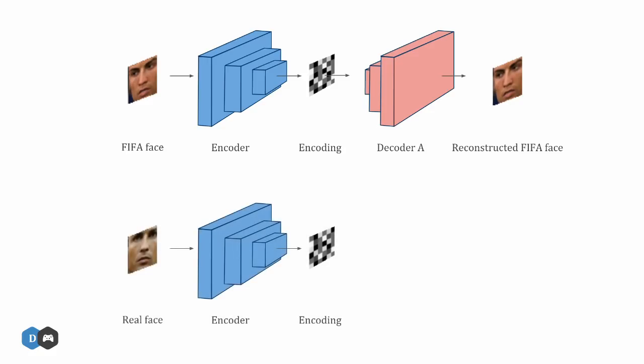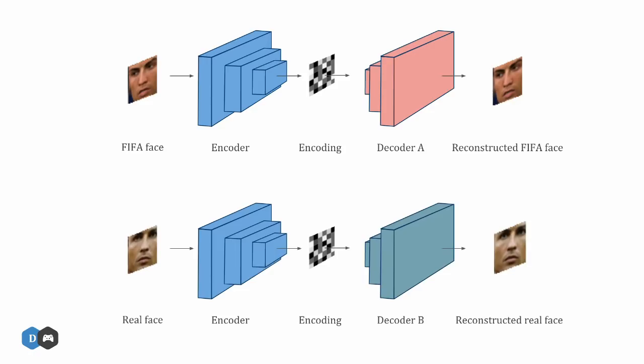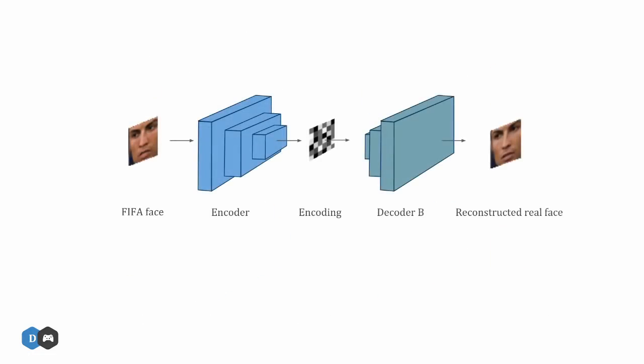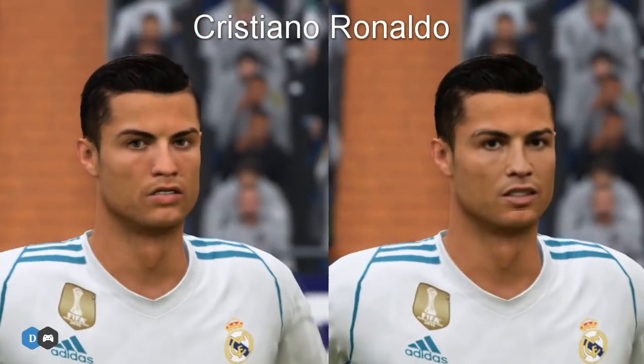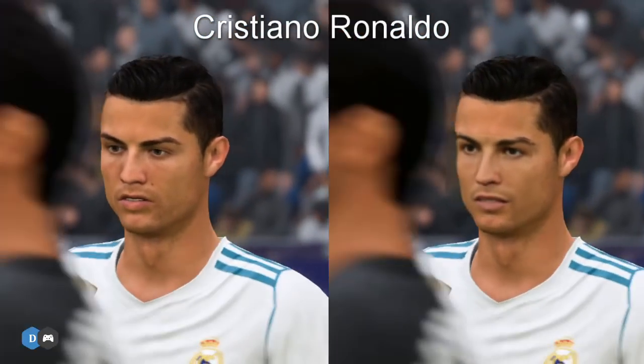Then we repeat this process with another network using the same encoder from the previous network but a different decoder that tries to learn Ronaldo's actual face from the Google images. After we have trained both models, we can input Ronaldo's face from FIFA to the second model and it will output the actual face of Ronaldo while maintaining the same facial expressions and lighting effects. After only 4 hours of training, the model has learned how to draw Ronaldo's face in any position and angle.